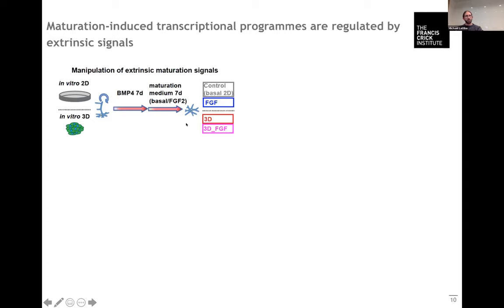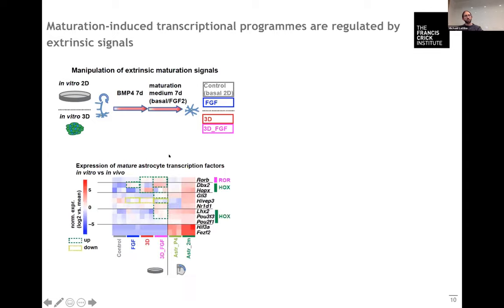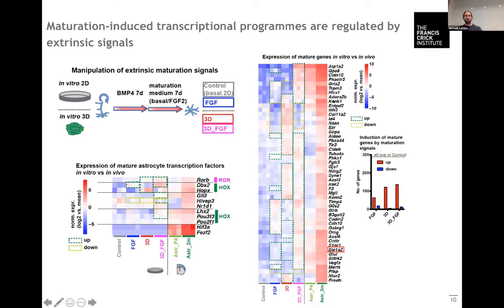Indeed what we find in these conditions, especially if we combine both FGF and 3D conditions, is an upregulation of several of these mature astrocyte transcription factors, and in line with this also the overall transcriptional profile of these cells is becoming much more mature.